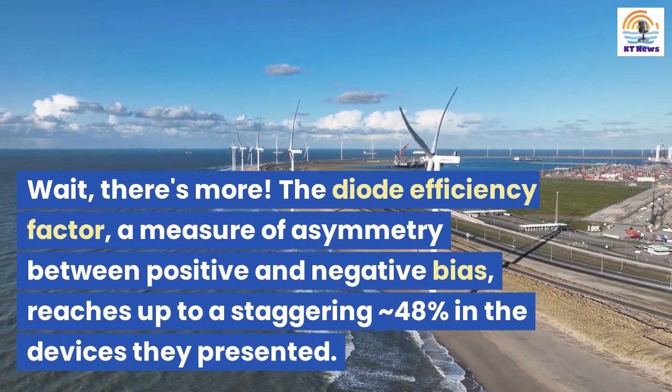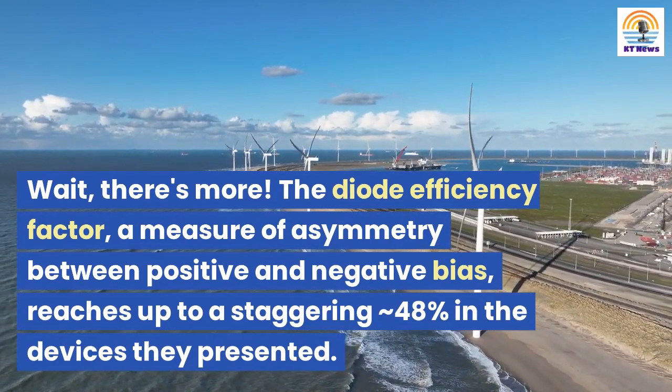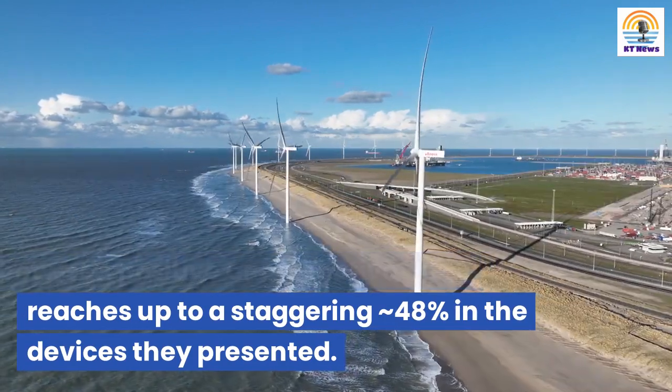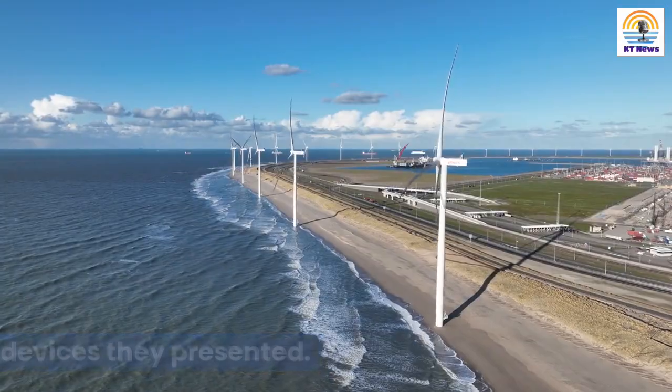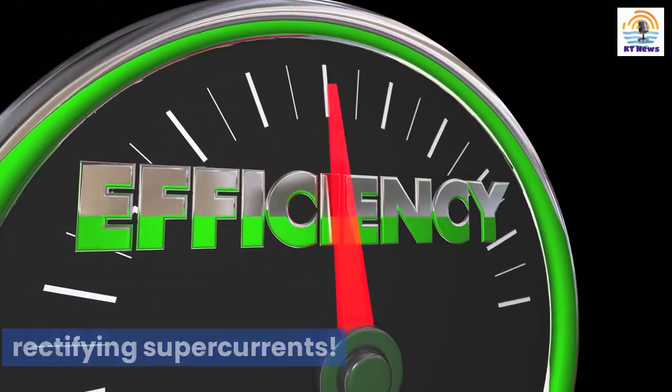Wait, there's more. The diode efficiency factor, a measure of asymmetry between positive and negative bias, reaches up to a staggering approximately 48% in the devices they presented. That's quite an impressive efficiency for rectifying supercurrents.